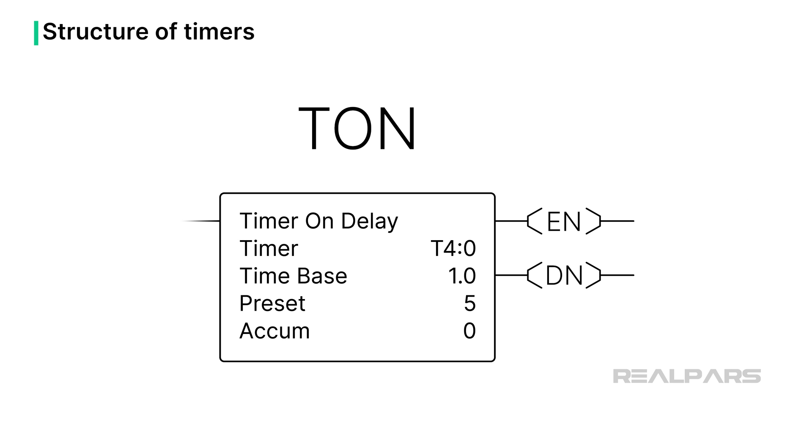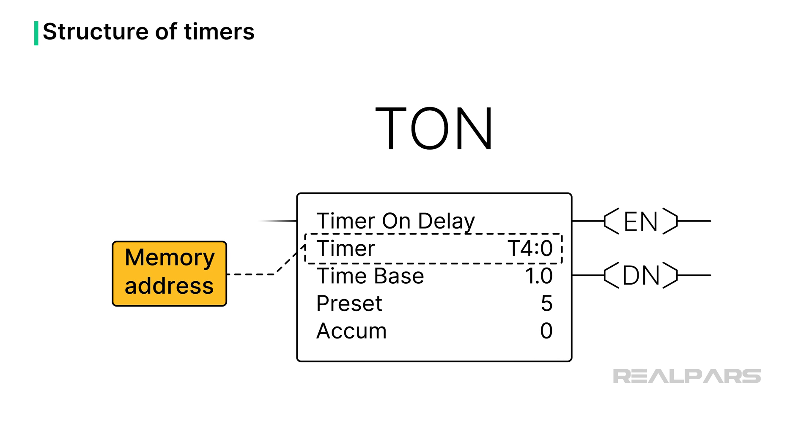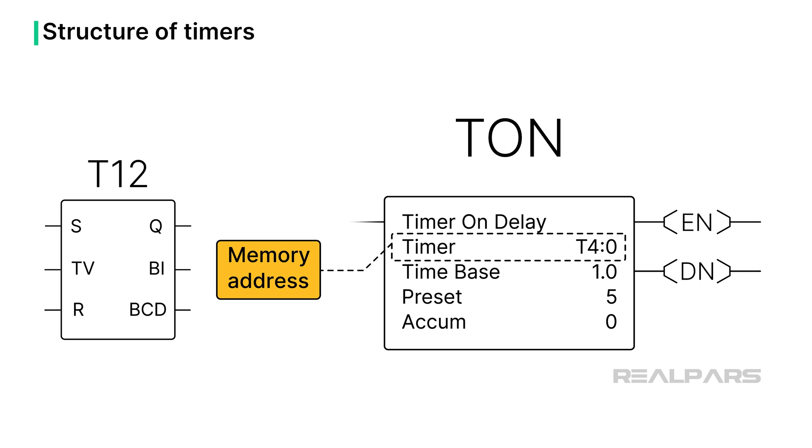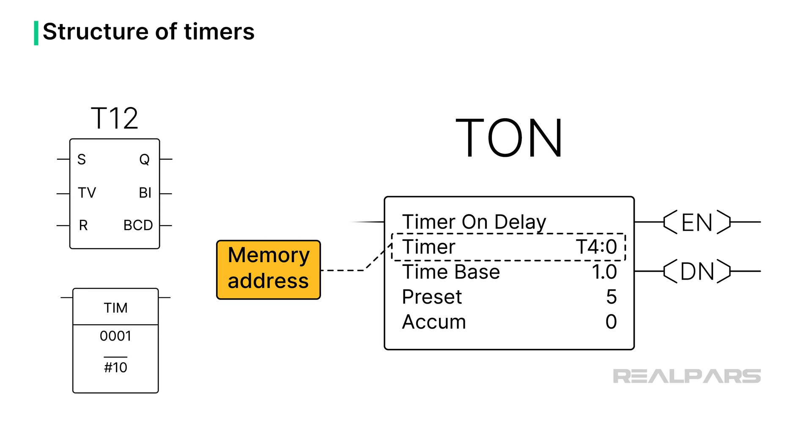Timers all have a basic structure. I will illustrate this using an IEC on-delay timer shown here. Timers all have a memory address. In this example, the address is T4:0. Depending on the PLC model, this address can be a file number and element as shown here, a simple timer number such as T12, or a numeric address.